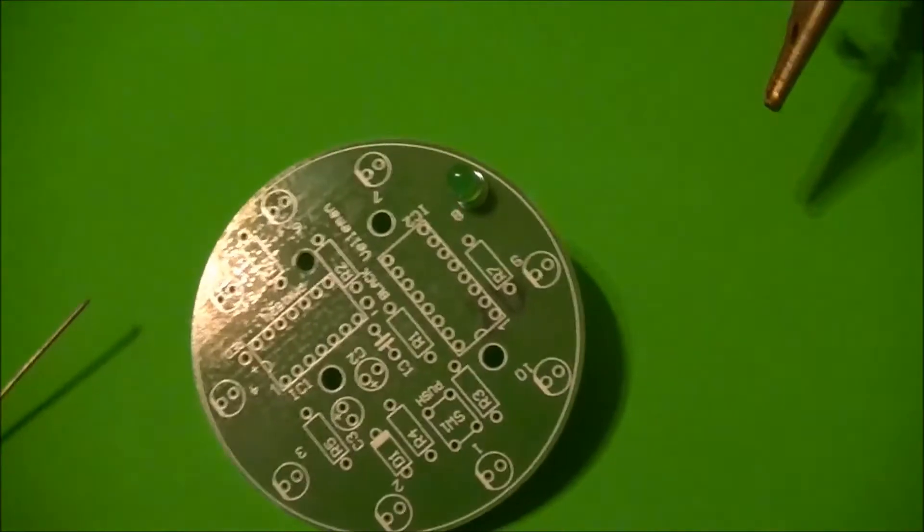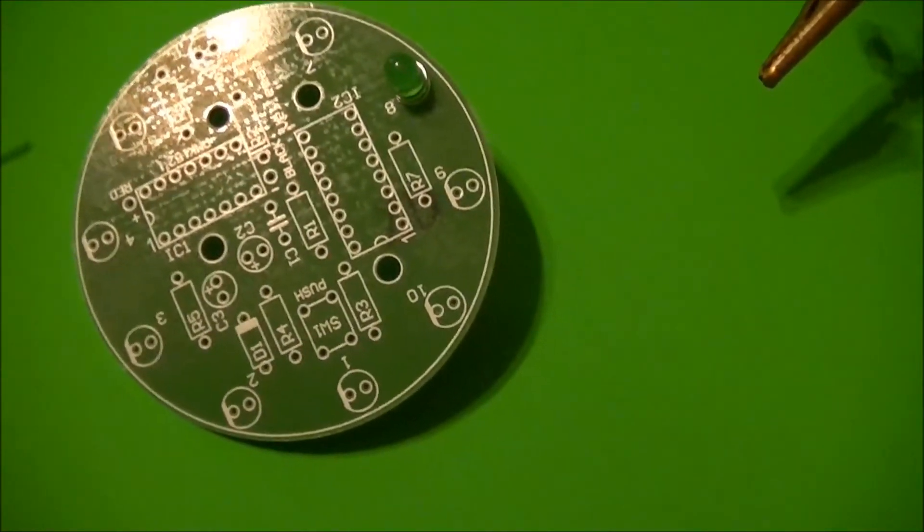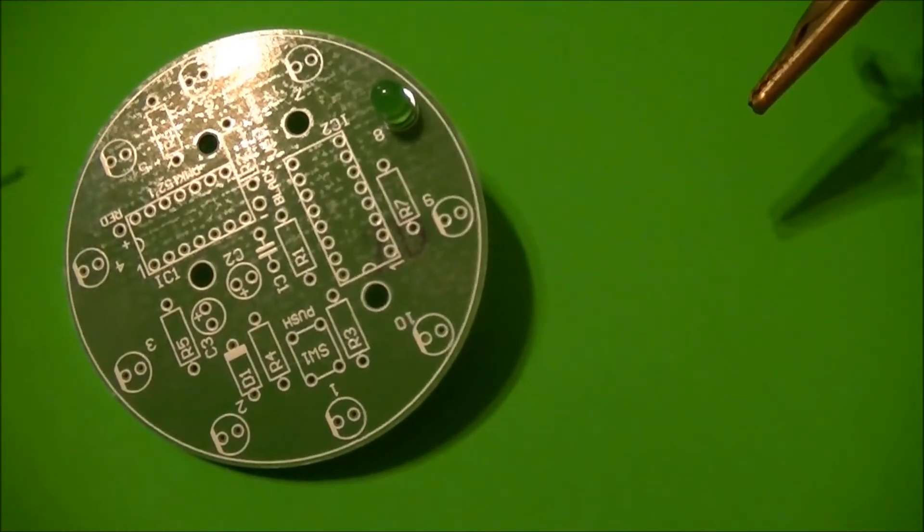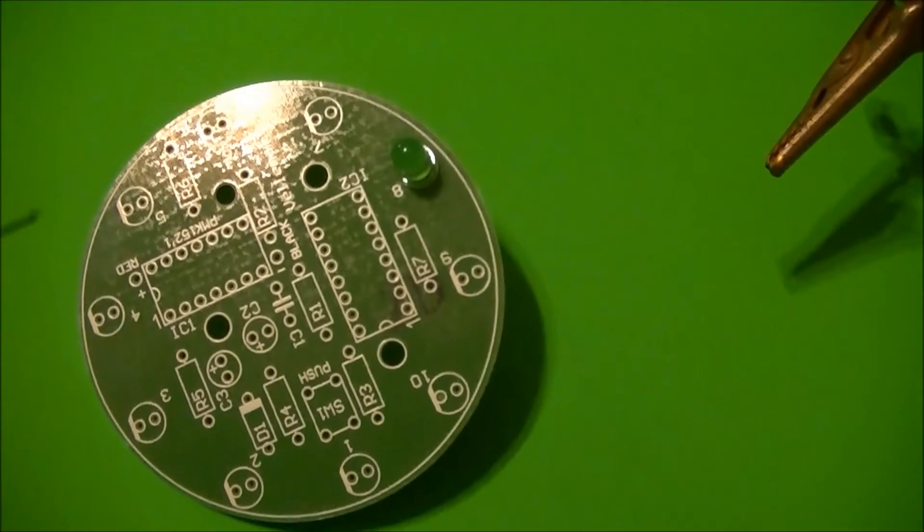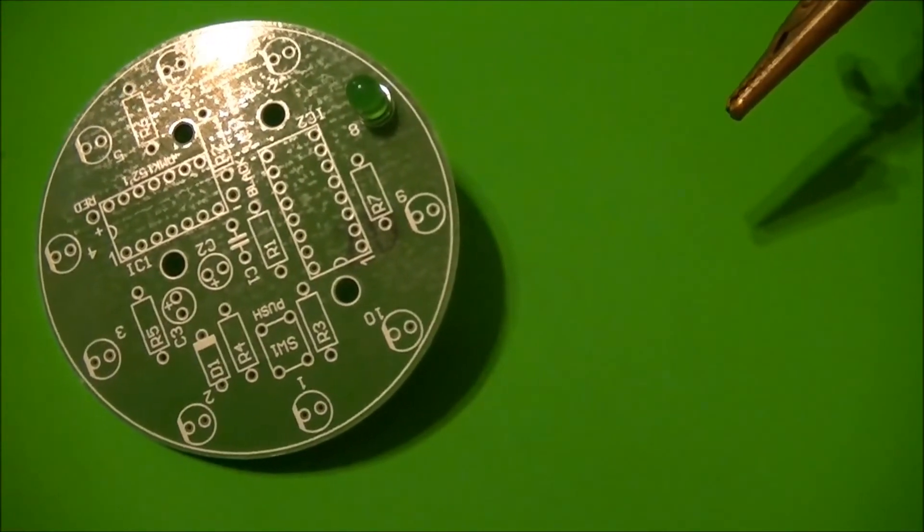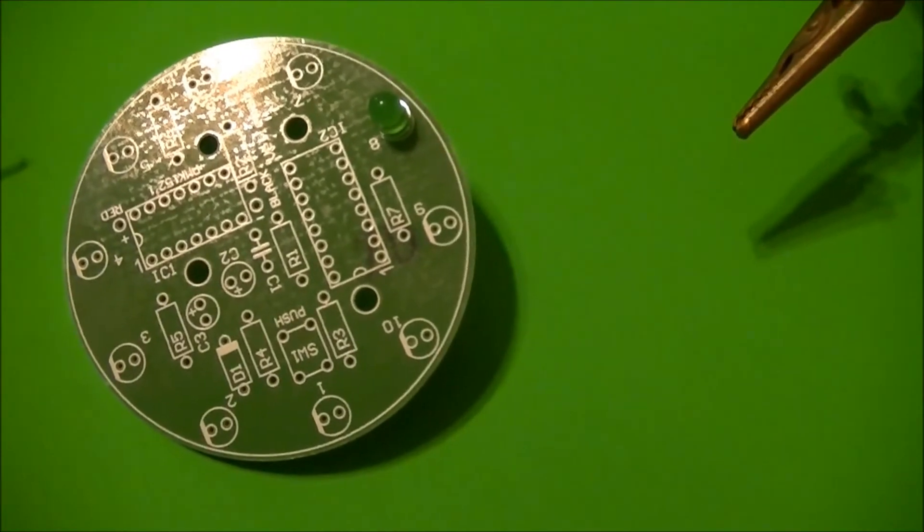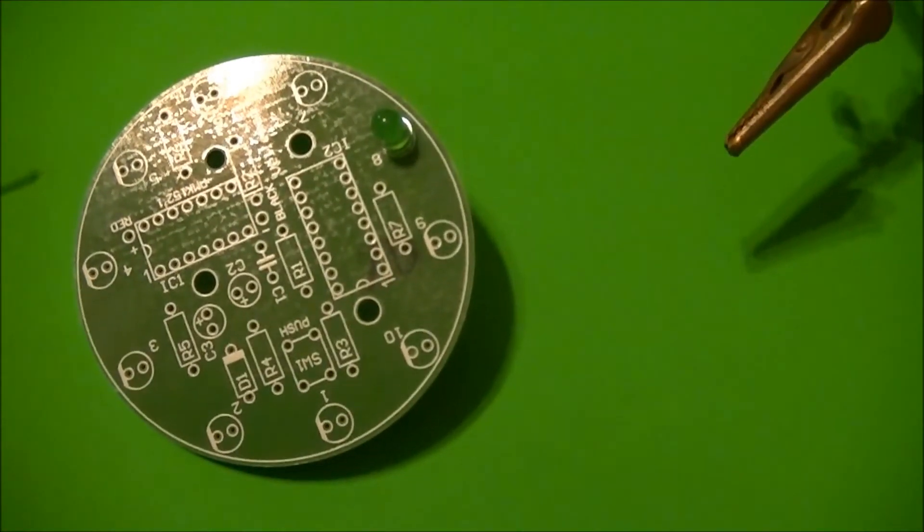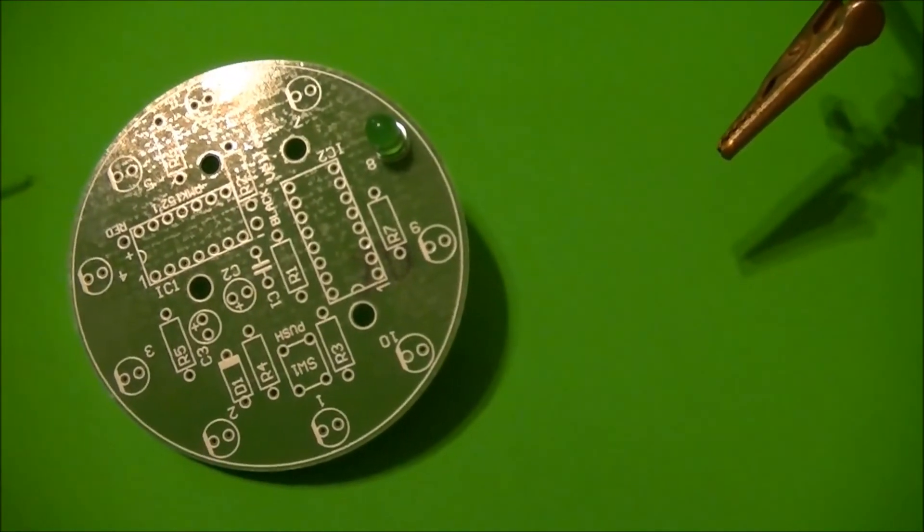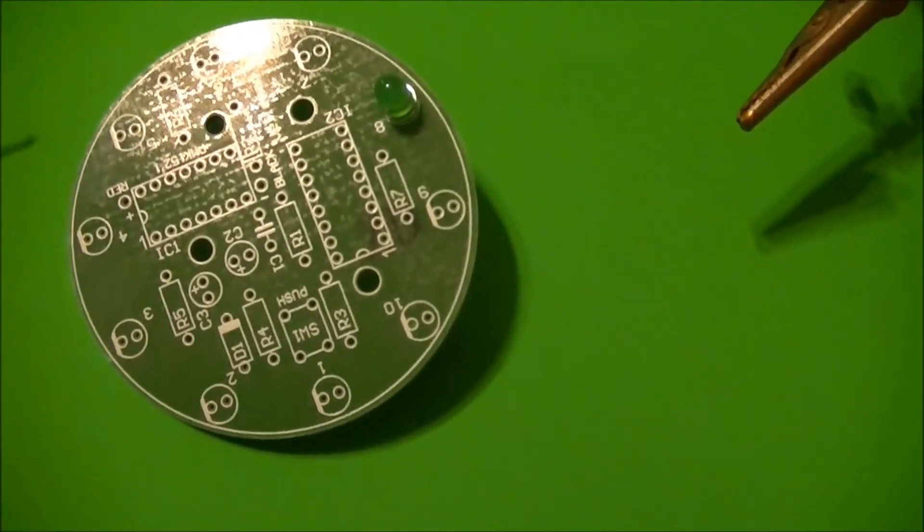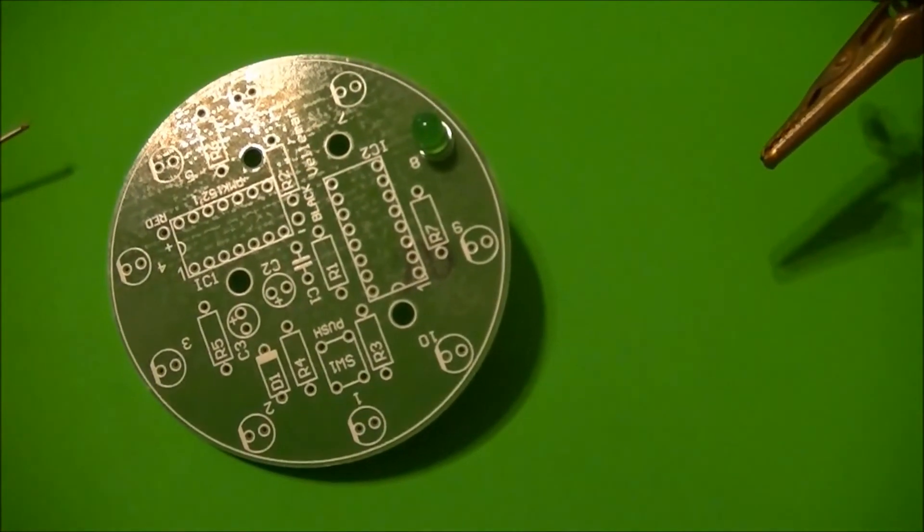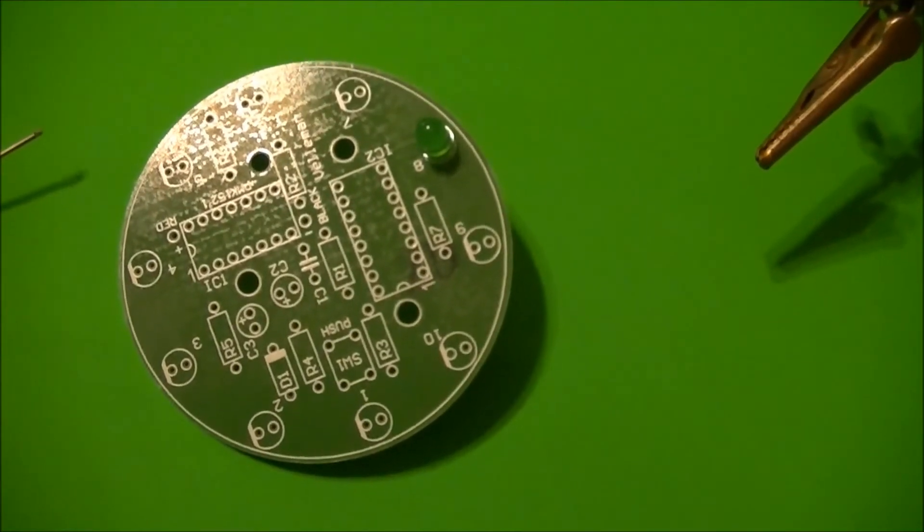As you can see on this board, as on the other board, the LEDs and the LED placement schematic on the board have a flat spot. If you match up the flat spot on the LED with the schematic on the board, you can't go wrong because that's the proper polarity.